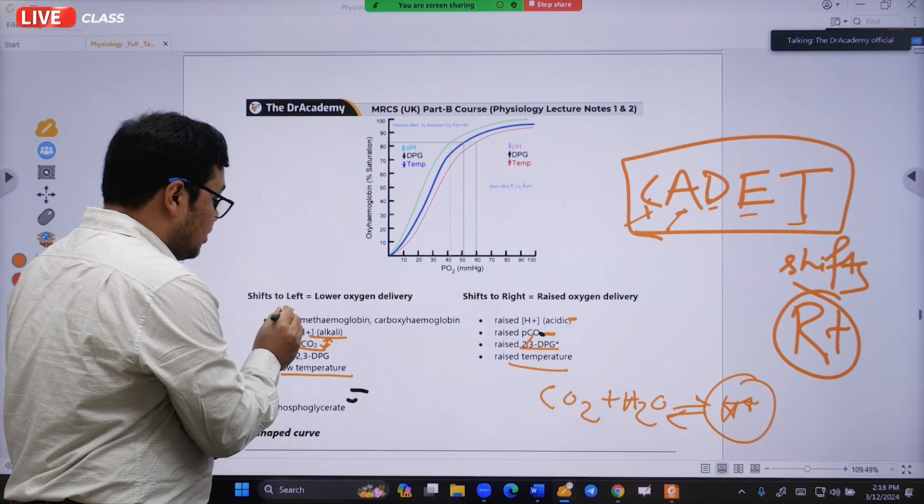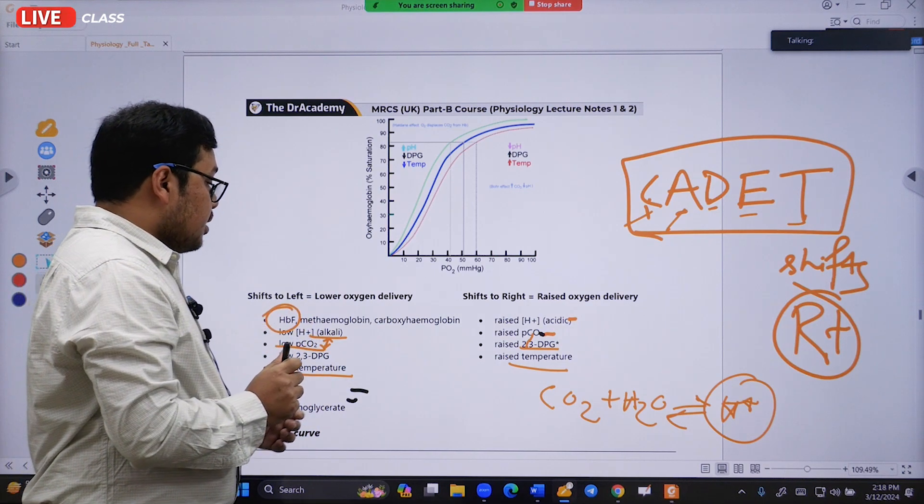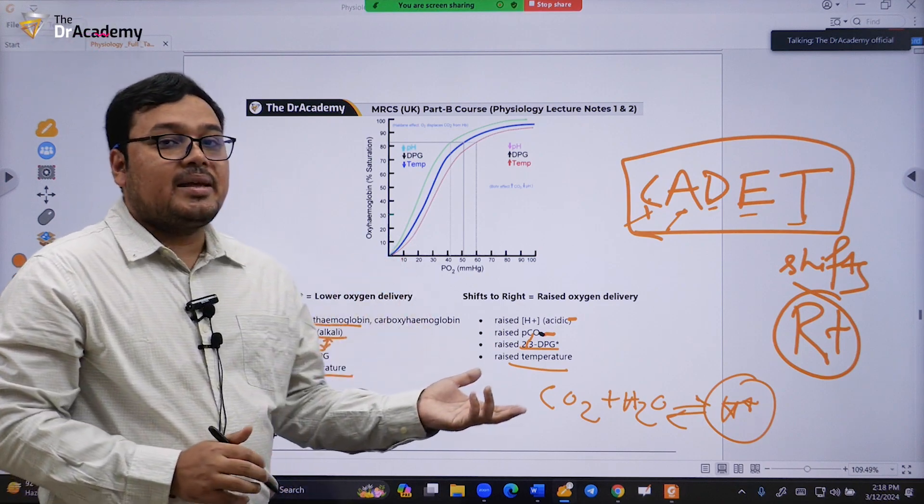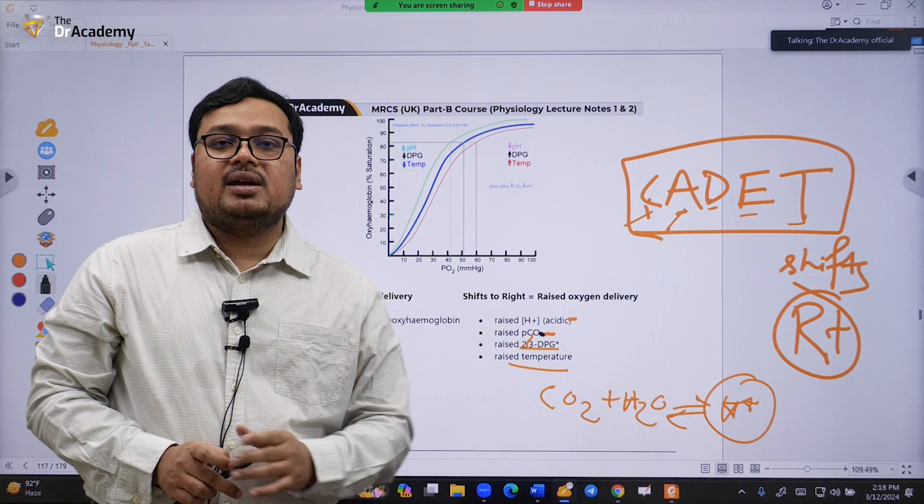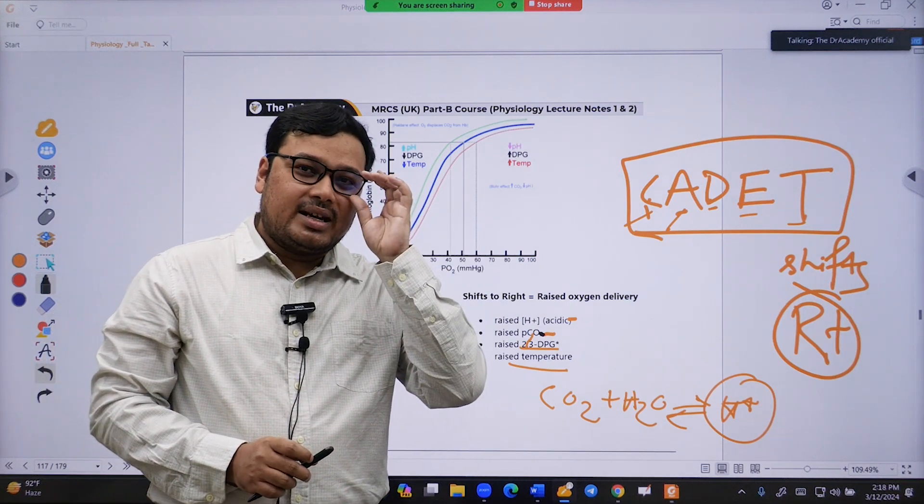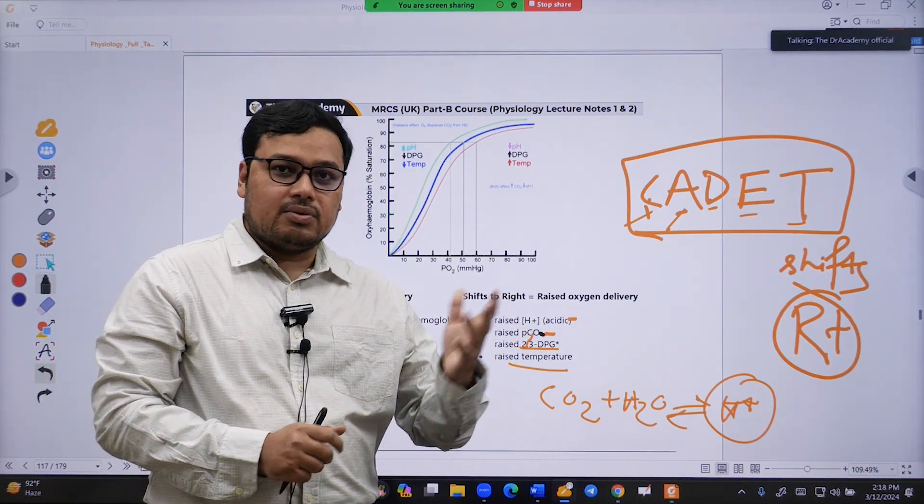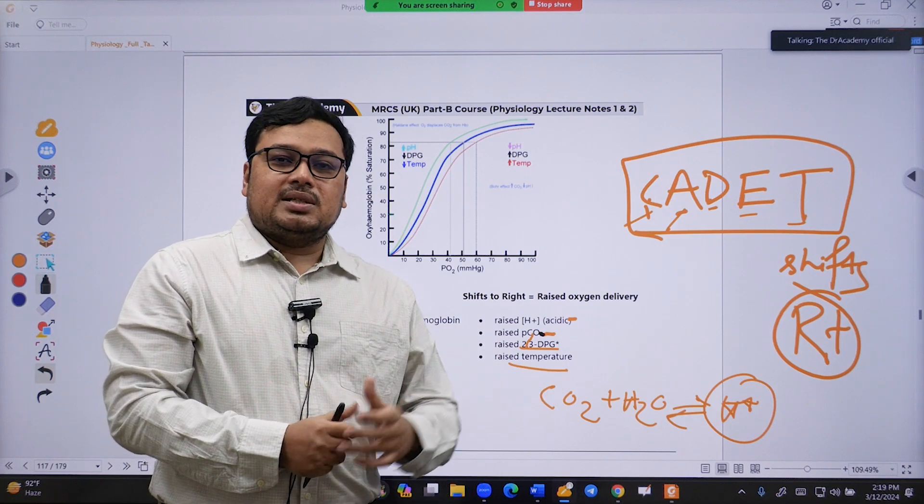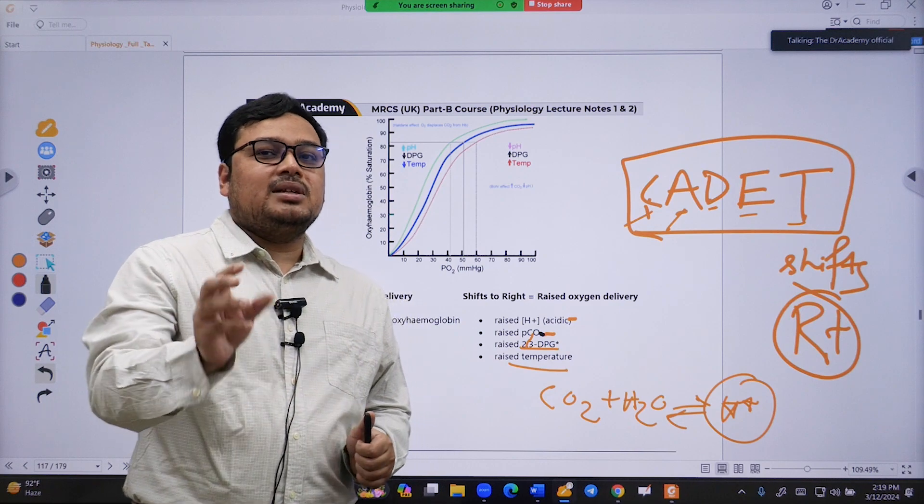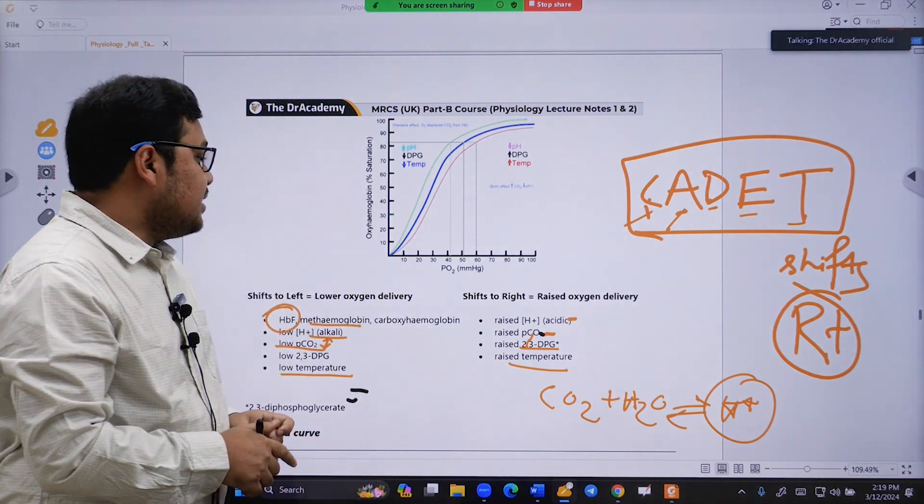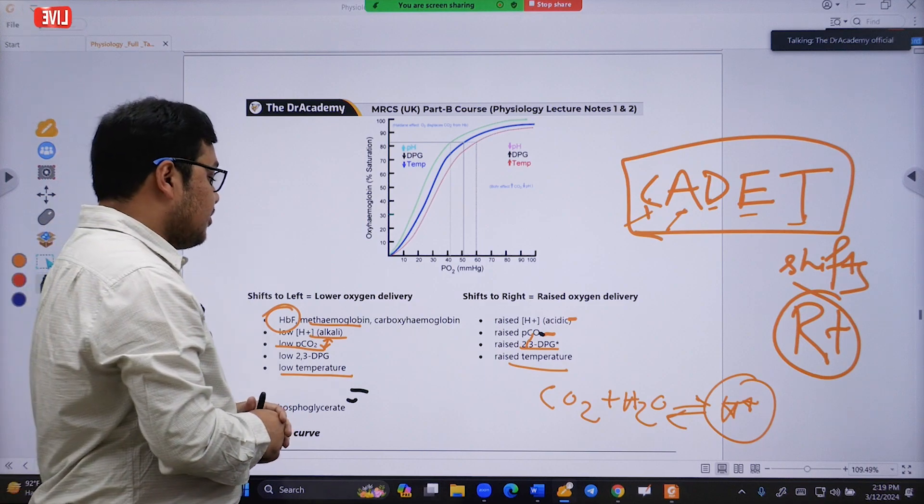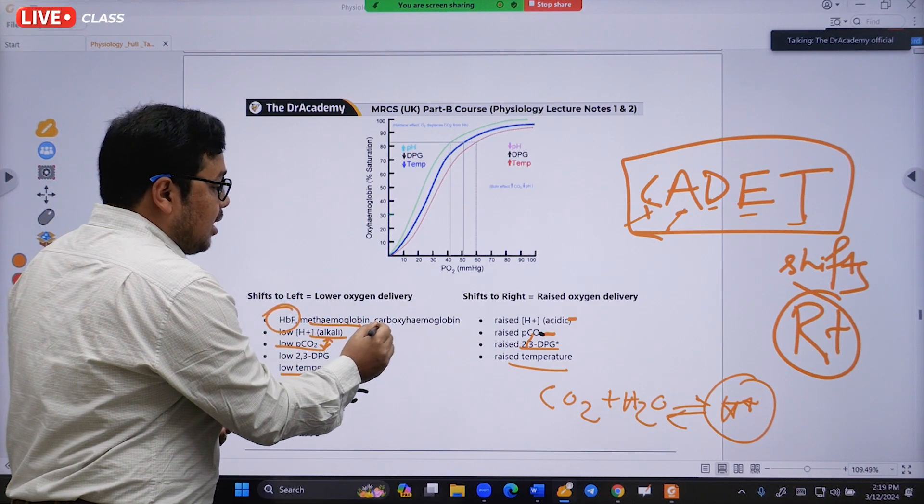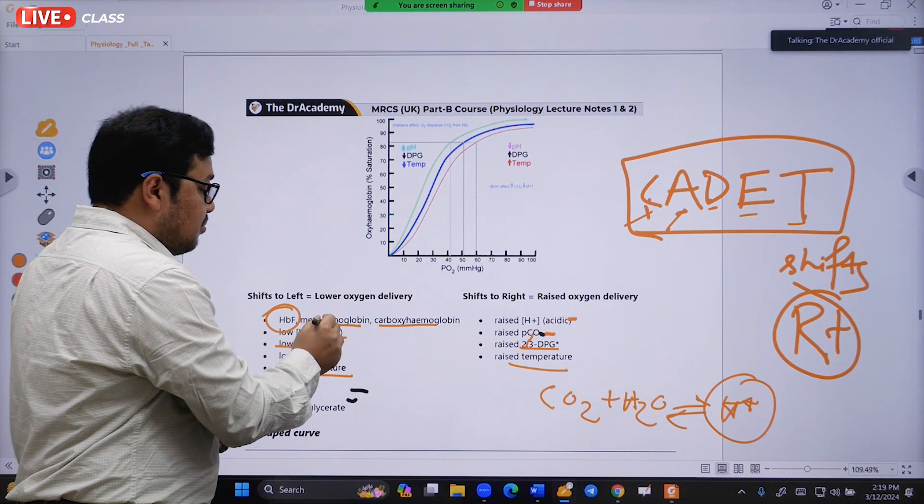Another common question: they might give you a patient diagnosed with sickle cell anemia, fetal hemoglobin, or carboxyhemoglobin. Possibly a patient has been rescued from a burn area where there was a fire, and the rescue team brought the patient to your emergency department.